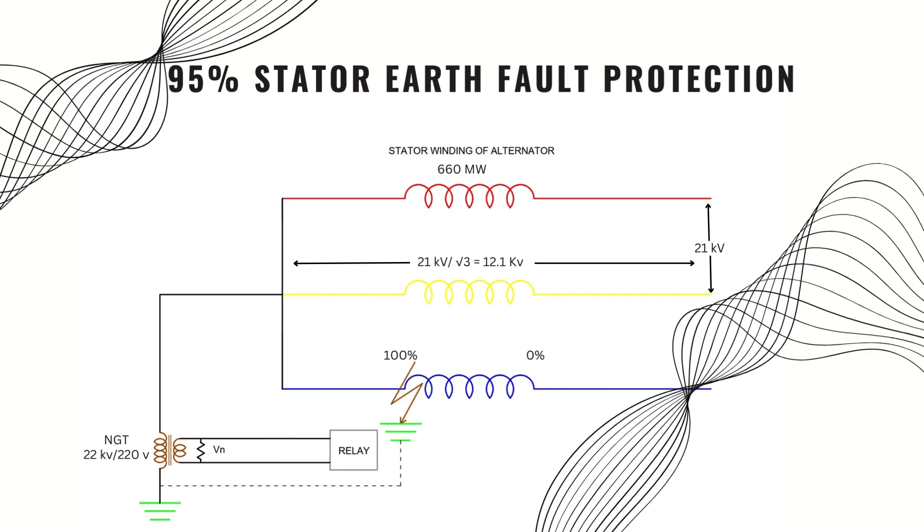But what will happen if any fault occurs near the neutral terminal which is outside of the 95% portion? In this context, this protection scheme will not work because if any faults happen near the neutral terminal, the voltage across that portion is very low. For example, 100 volts, then VN will be 1 volt which is much less than the predetermined value. So relay will not sense any earth fault.